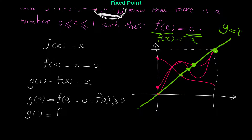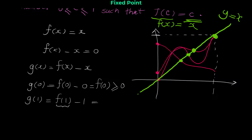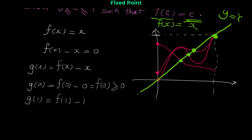Now let's calculate g(1). g(1) = f(1) − 1. Since f(x) ≤ 1 for every value of x, we have f(1) ≤ 1. If you subtract 1 from a number that is less than or equal to 1, you get a result that is less than or equal to 0. So g(1) ≤ 0. Equal to 0 happens if f(1) = 1 exactly; otherwise it is less than 0.